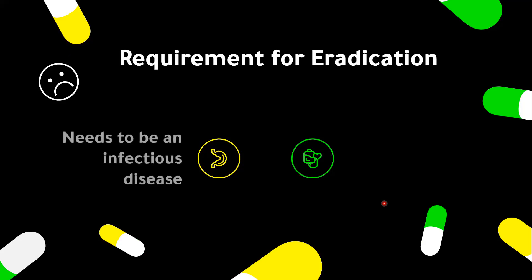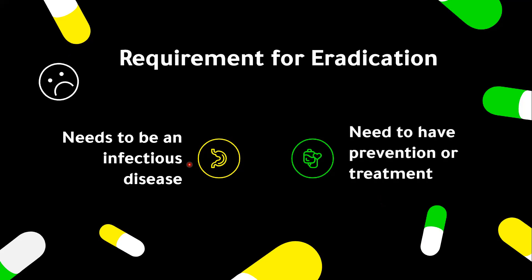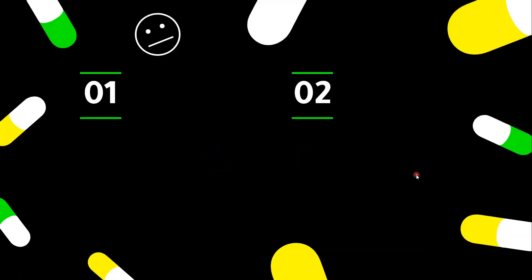What are the requirements for a disease to be eradicated? Firstly, it should be an infectious communicable disease. It should have a human reservoir — able to transmit human to human — or involve a zoonotic or animal reservoir. Secondly, it needs to have a prevention or treatment: prevention can include vaccination, and treatment involves giving the necessary drugs.